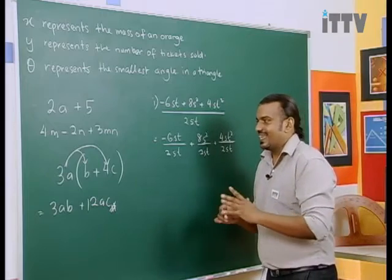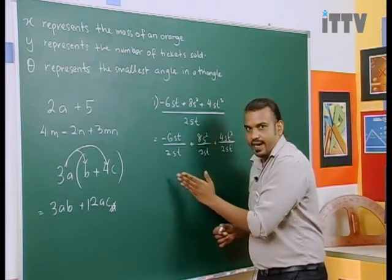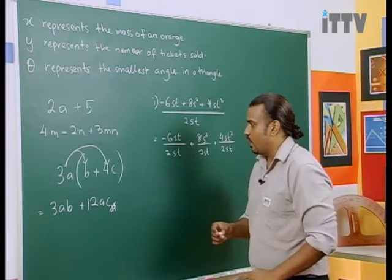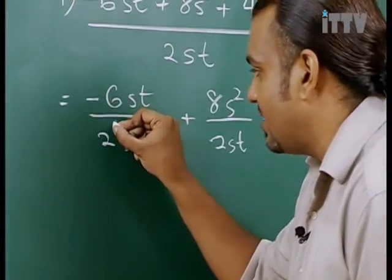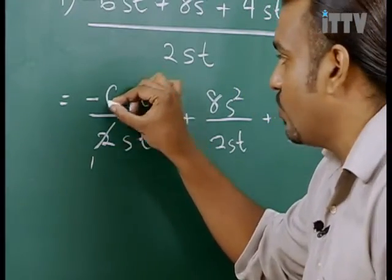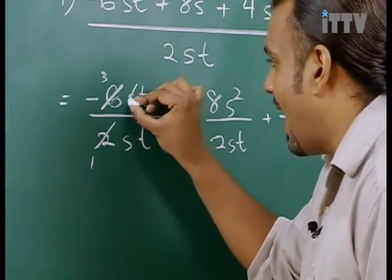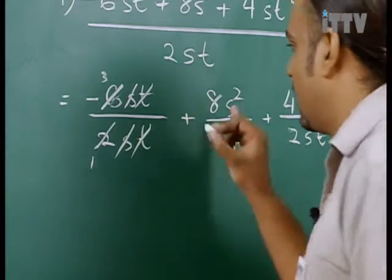Now, use the cancellation technique. On top and down, numerator and denominator, whatever is common, cancel them off. So now I'm going to do one by one. I've got two. I've got six. I can divide this two by two. I get one. Six also must divide by two. I will get three. S and S is cancelled. P and T is cancelled. Let's go one by one.